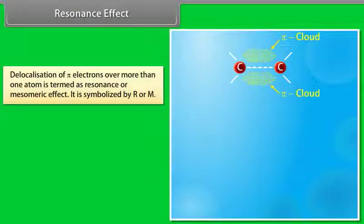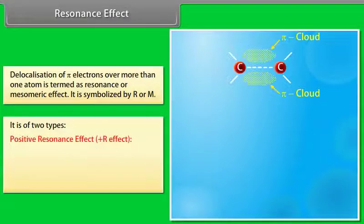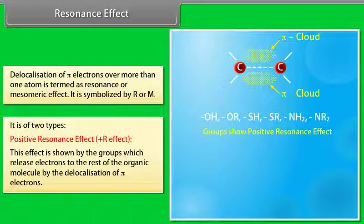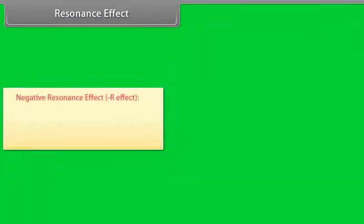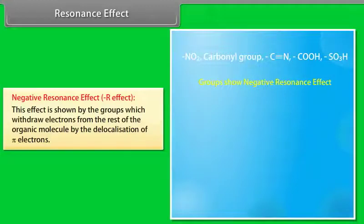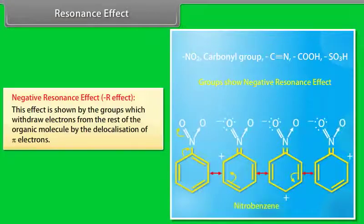Delocalization of pi-electrons over more than one atom is termed as the resonance or mesomeric effect, symbolized by R or M. It is of two types: positive resonance effect (positive R effect) — shown by groups which release electrons to the rest of the organic molecule by delocalization of pi-electrons, for example aniline; and negative resonance effect (negative R effect) — shown by groups which withdraw electrons from the rest of the organic molecule by delocalization of pi-electrons, for example nitrobenzene.